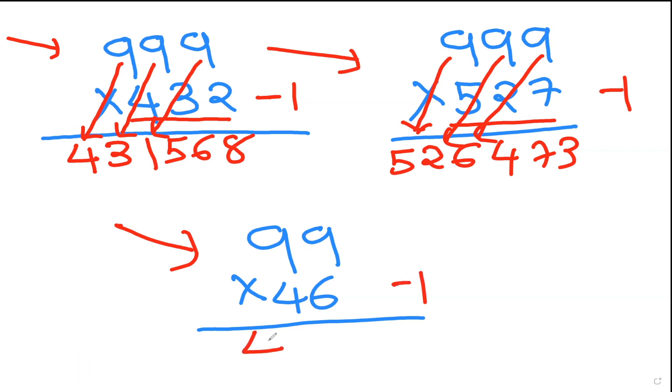Now I'll do this: 9 minus 4, which is 5, and this is 9 minus 5, which is 4. So 4554 is my answer. Is it not really amazing?